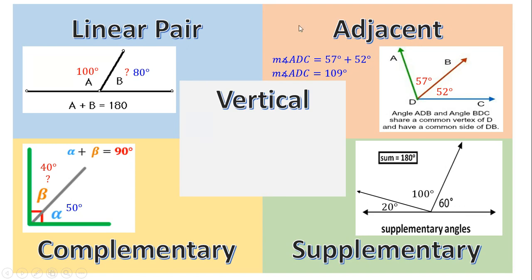So these are the four types of angles that add up to something. Linear pair adds to 180. Supplementary adds to 180. Complementary adds to 90. Adjacent angles add up to give whatever the total is. These are what we call addition relationships — where they add up to equal something.